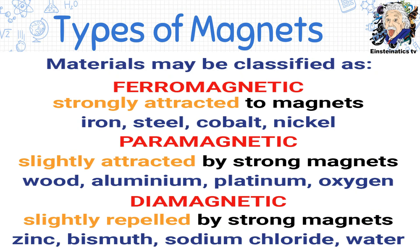Ferromagnetic materials are those strongly attracted to magnets — examples include iron, steel, cobalt, and nickel. Paramagnetic materials are slightly attracted by strong magnets; examples include wood, aluminum, platinum, and oxygen. Diamagnetic materials are slightly repelled by strong magnets; this includes zinc, bismuth, sodium chloride, and water.